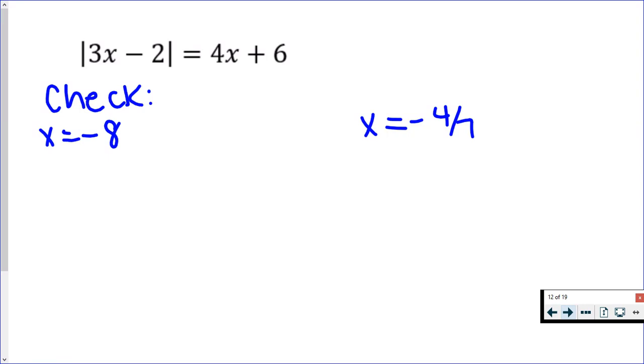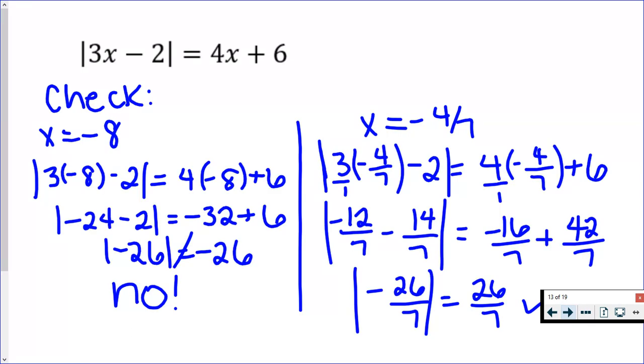This is what you should be doing. You can see in my work that one of these answers does not match. When you plug in negative 8, you would end up with negative 26 in the absolute value sign, but on the right hand side you get negative 26. If you know what absolute value means, it means distance from zero. If you take the absolute value of negative 26, you are not going to get negative 26—the answer would be positive 26. So negative 8 would not be one of my answers.